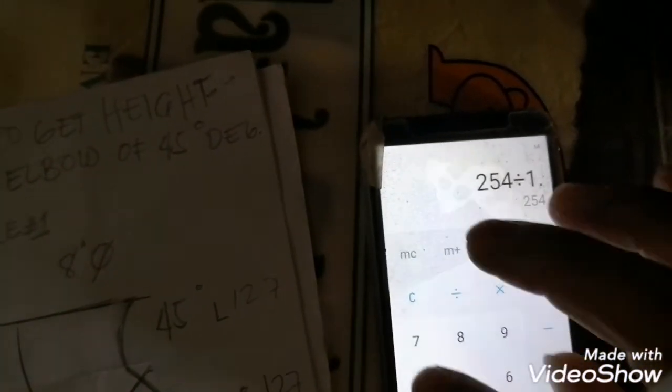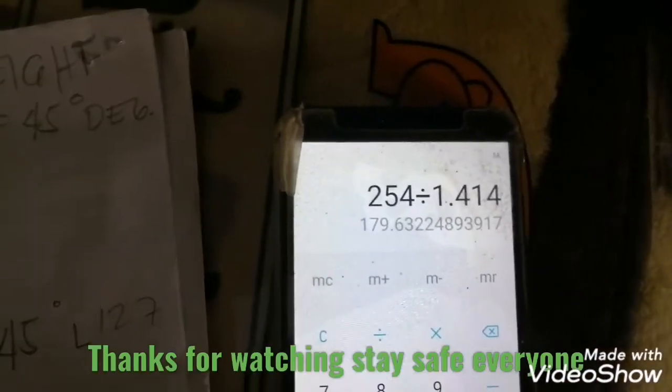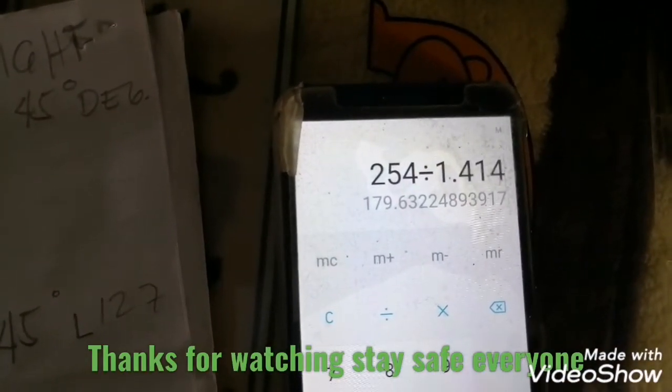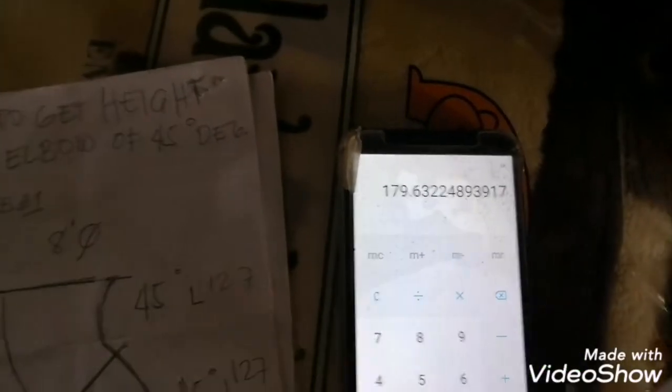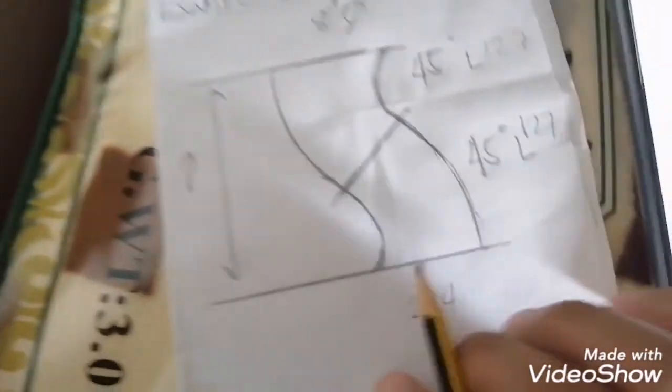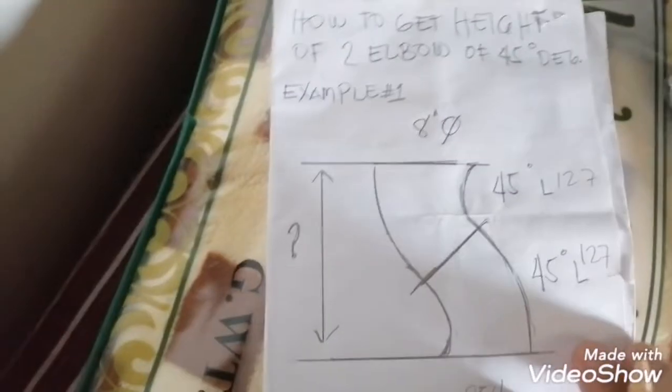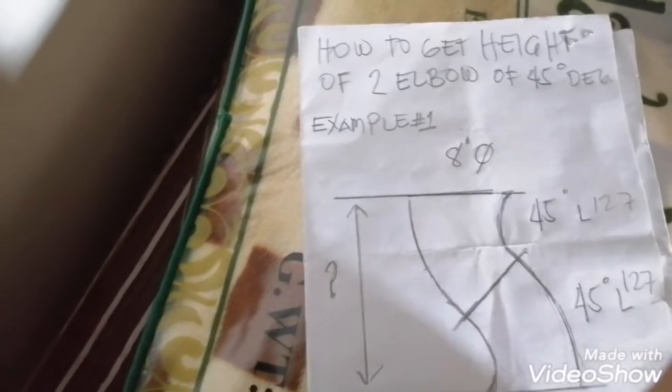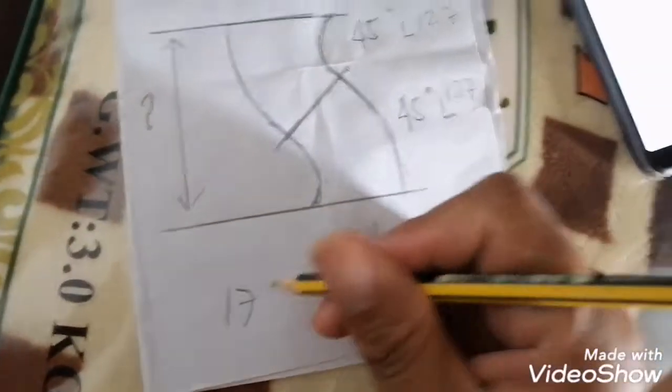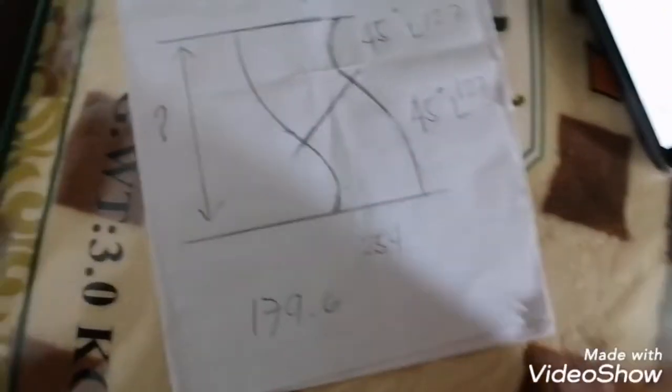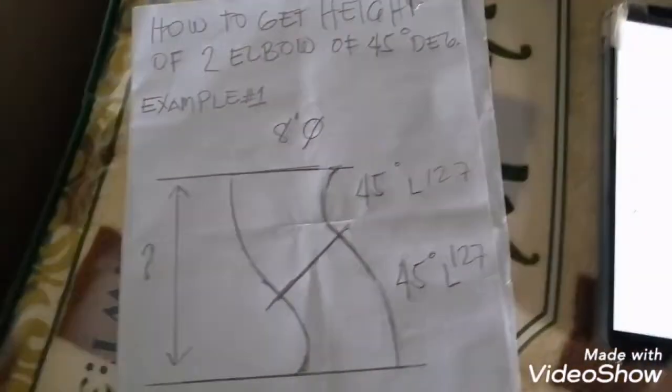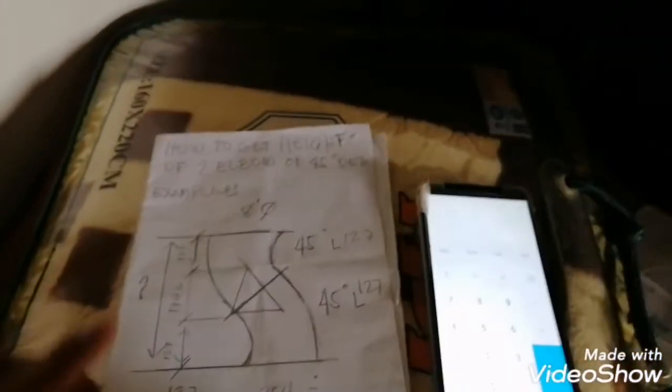Divide the constant of 45 degrees, which is 1.414. The answer is 179.6. This is it, and the answer is 179.6.